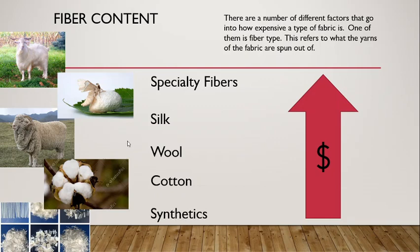Next up we have silk, which comes from the cocoon of the silk moth. It is more expensive because the silk cocoon itself is very small, so you need quite a lot of them to make any fabric. In addition, the threads and fibers harvested from the cocoon are very, very fine — you need quite a lot of them to twist into a substantial yarn. Because of this, silk tends to be harder to cultivate in large quantities and so is more expensive.